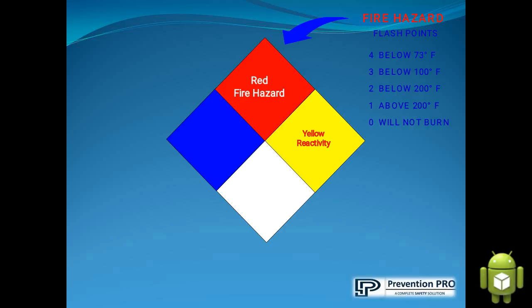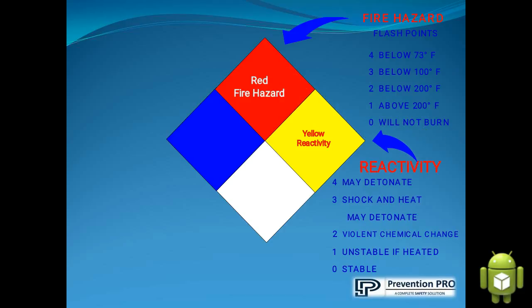Now we are going to see about the yellow quadrant. Yellow represents reactivity. The numbers also range from 0 to 4. If the yellow box has the number 0, it says that it is stable. If the number is 1, it is unstable only if heated. If the number is 2, it undergoes violent chemical change. If the number is 3, it may detonate if treated with shock and heat. And if the number is 4, it may detonate.